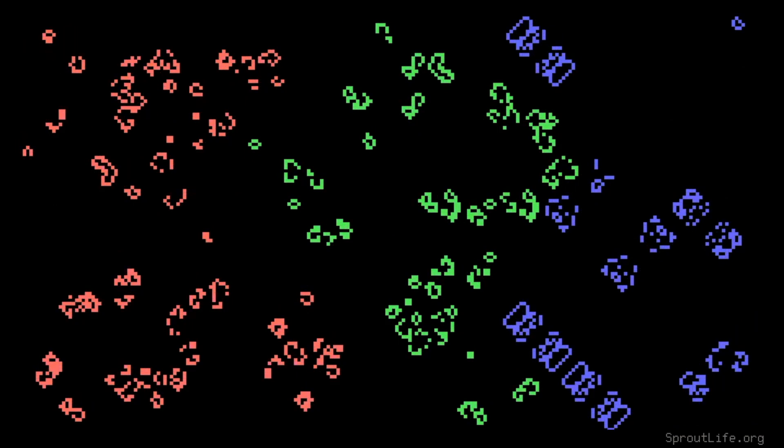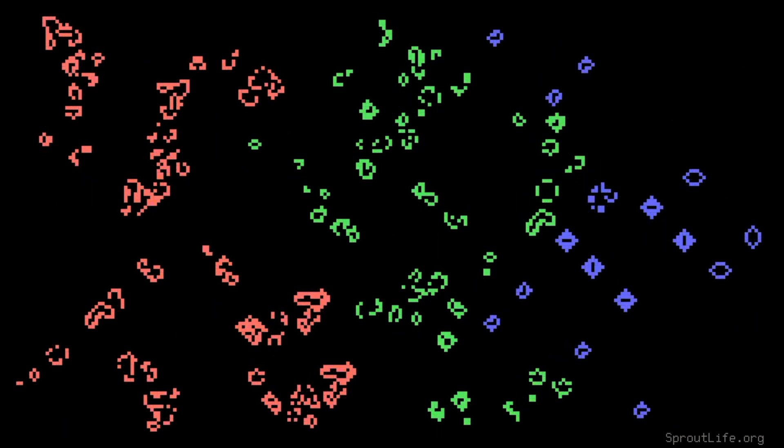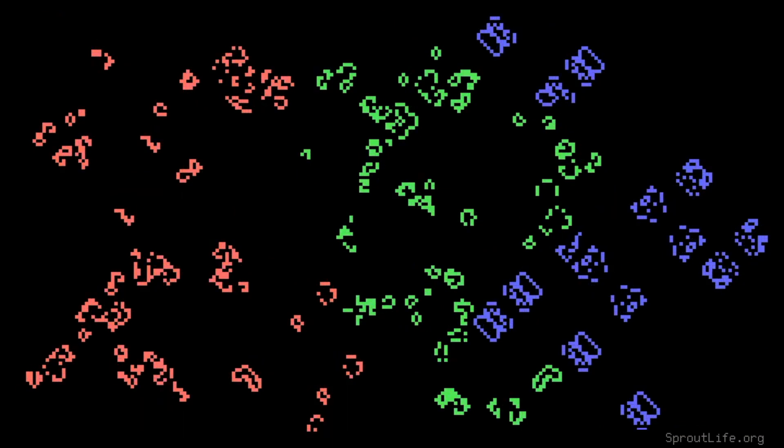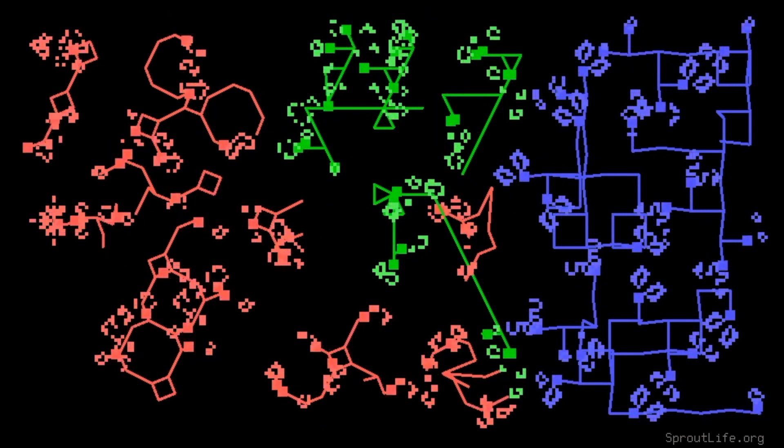Sprout Life is based on the Game of Life, which was created back in 1970 by the late and great mathematician John Conway, who sadly passed away last year. While the original Game of Life pretty quickly stabilizes, Sprout Life adds an extra rule that keeps the game going and evolving.